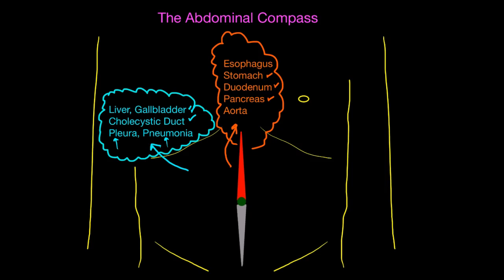Go from skin to spine and consider all structures in this area. Also worth noting: an inferior wall MI can rarely cause epigastric pain, especially in elderly patients. Keep this in your differential so you don't miss it — inferior wall MI sometimes presents as vague epigastric abdominal pain.